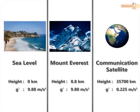For example, at the sea level, G' is 9.88 metre per second square. At a height of 8.8 kilometre on Mount Everest, G' is 9.80 metre per second square. And for a communication satellite 35,700 kilometre above the earth's surface, G' is 0.225 metre per second square only. This shows that acceleration due to gravity varies with height.